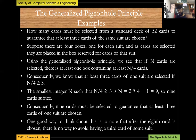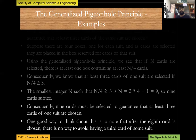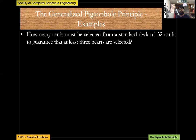Another way to see this: after eight cards are chosen, there is no way to avoid having a third card of the same suit. Up to eight cards it remains possible, but beyond that there is no possibility of avoiding a third card of the same suit.